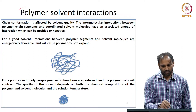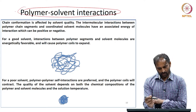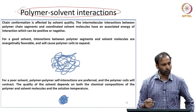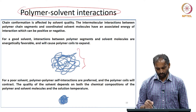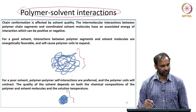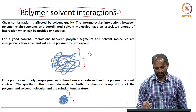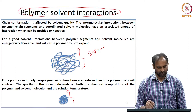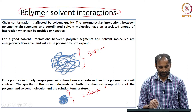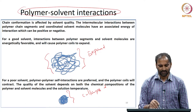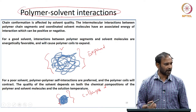Polymer-solvent interactions determine the conformation a polymer takes. There are two conformations to consider: one is what is called an expanded configuration, and the other is more like a collapsed configuration. Whether the polymer is in the expanded state or the collapsed state in a solution depends on the polymer-solvent interaction.